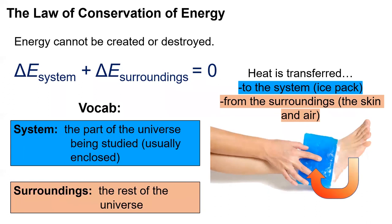The distinction between system and surroundings allows us to write the first law of thermodynamics in a very useful way. Because energy cannot be created or destroyed, the change in energy of the system plus the change in energy of the surroundings always equals zero.